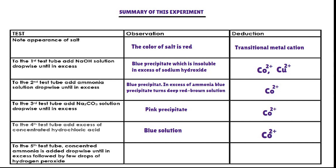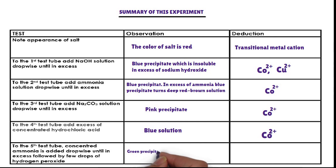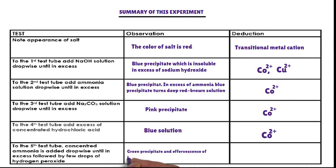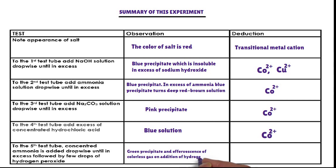Second confirmatory test: to the fifth test tube, concentrated ammonia is added dropwise until in excess, followed by a few drops of hydrogen peroxide. The cation that forms a green precipitate with concentrated ammonia and effervescence of colorless gas on addition of hydrogen peroxide is cobalt-2 ion. Cobalt-2 ion is confirmed. The cation present in the salt is cobalt-2 ion.